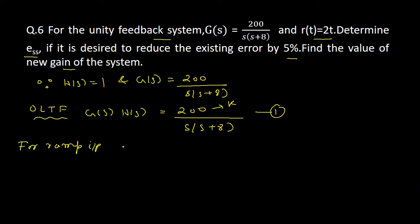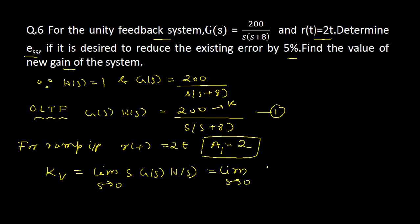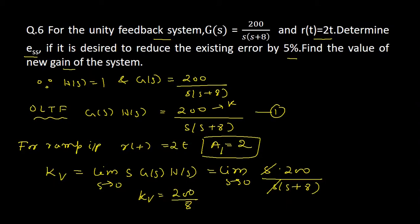The ramp input is given since R(t) = 2t, it is a ramp input with magnitude a = 2. For ramp input we find the velocity error coefficient: K_v equals the limit as s tends to 0 of s·G(s)·H(s). Substituting equation 1, we get the limit as s→0 of s·200/[s(s+8)]. The s terms cancel, and putting the limit gives K_v = 200/8, so K_v equals 25.